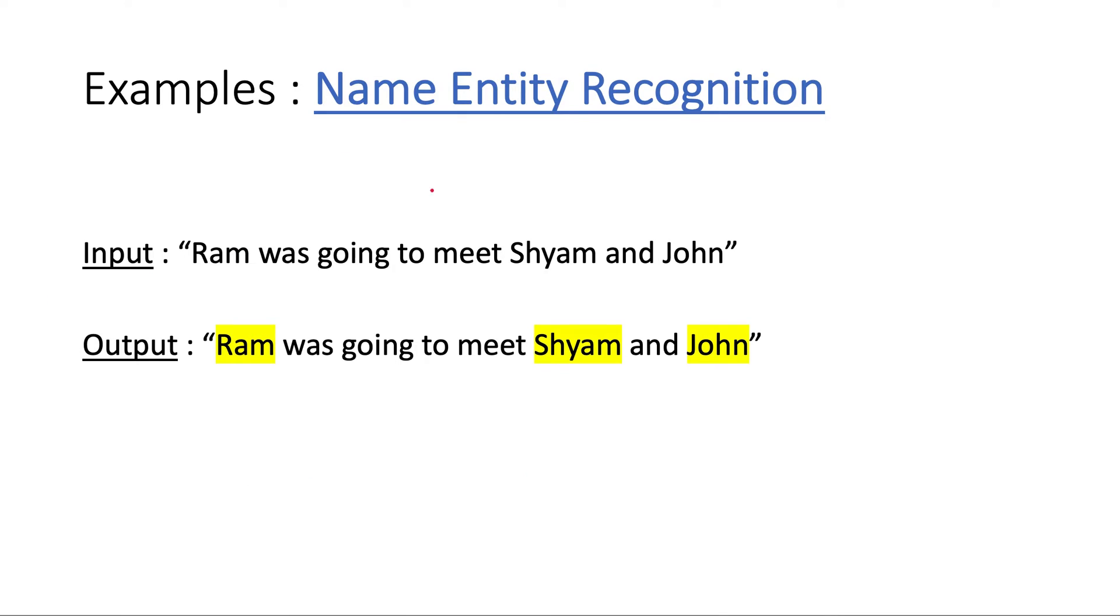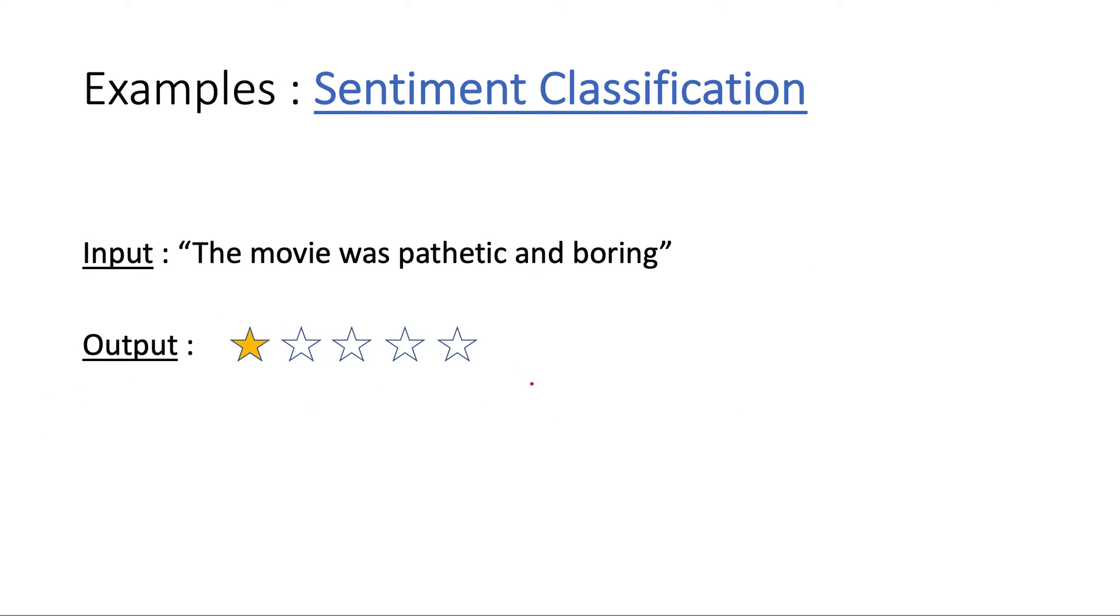Let's see some more examples - named entity recognition. Here we are given a sentence and we are asked to find the words which correspond to some name. So here Ram, Sam, and John, these are the names of some person. The task of this RNN is to predict these words, so we can denote it as 1, 0, 1, 0, 0, 0, 1, 0, 1, where 1 means this word corresponds to a named entity.